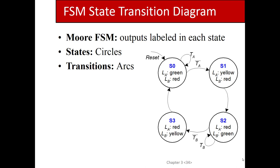If an output isn't specified in a state it's assumed to be zero. Loop-backs are implied — if no coin is inserted, a state just stays where it is. If the user walks away after putting in a dime, the machine will just stay in that state indefinitely, and the next person gets a free 10 cents — but that's not the point we're modeling here.